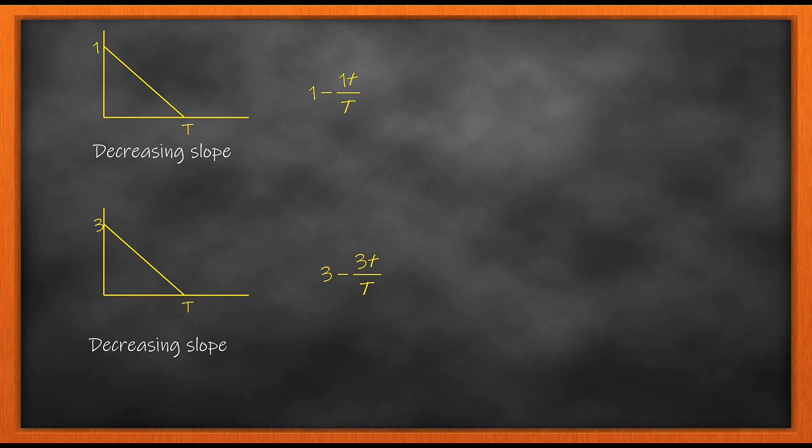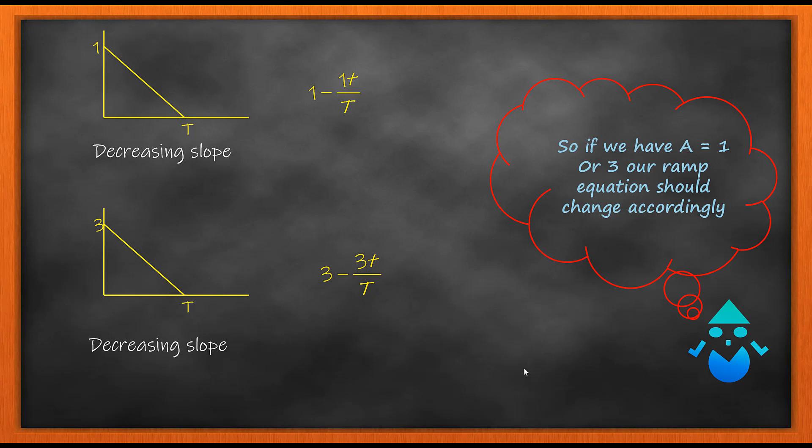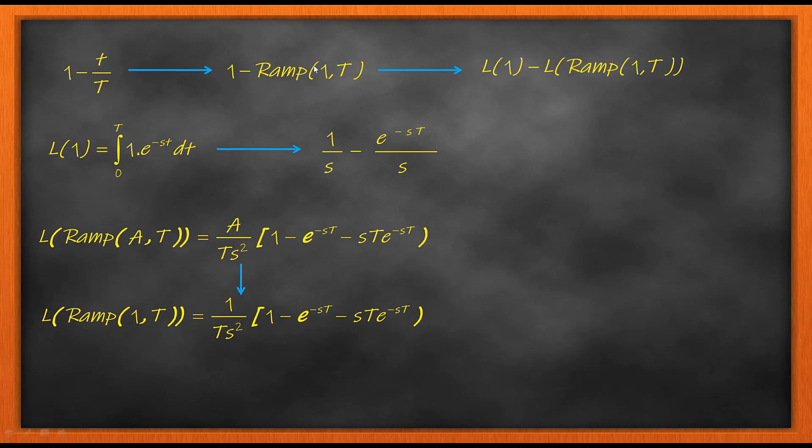Knowing this, different values for A and T will alter your equation in this manner. Now applying this new formula for a decreasing ramp, we get our equation as 1 - t/T, which is 1 - ramp(1,T).